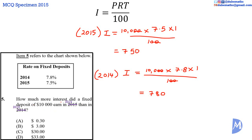How much more interest did the fixed deposit of $10,000 earn in 2014 ($780) than in 2015 ($750)? We subtract 750 from 780 and get $30. The answer is C.